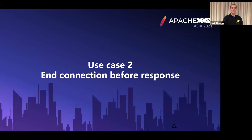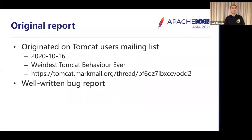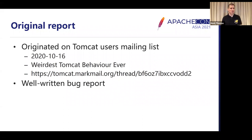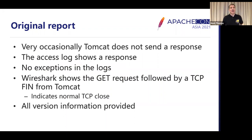The second use case, again from the user's mailing list, this time back in October last year. It's worth noting that at no point was I able to recreate the error, and at no point did I have access to the system where the error was occurring. All of this was done entirely remotely, bouncing suggestions and results back and forth over the mailing list, with the exception of some more detailed logging which was sent to me directly due to commercial sensitivities. And again, it was a well-written bug report — though not as much information as last time.